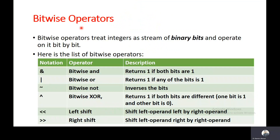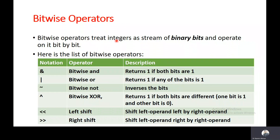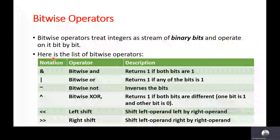Let's start with bitwise operators. Bitwise operators are used to perform bitwise calculation on integers. They treat integers as a stream of binary bits and operate on them bit by bit, meaning it first converts integers into a bit stream before operating on it.